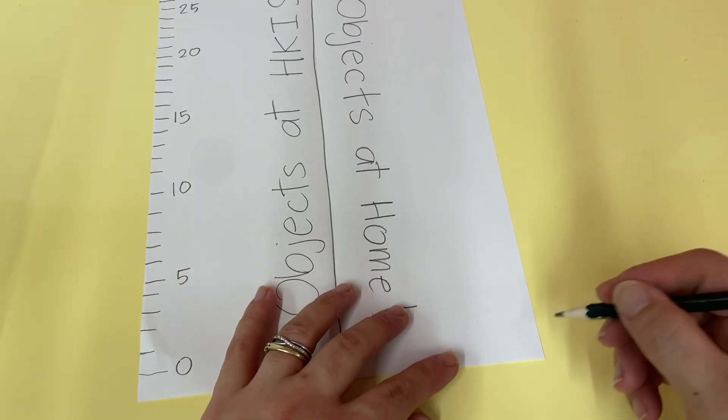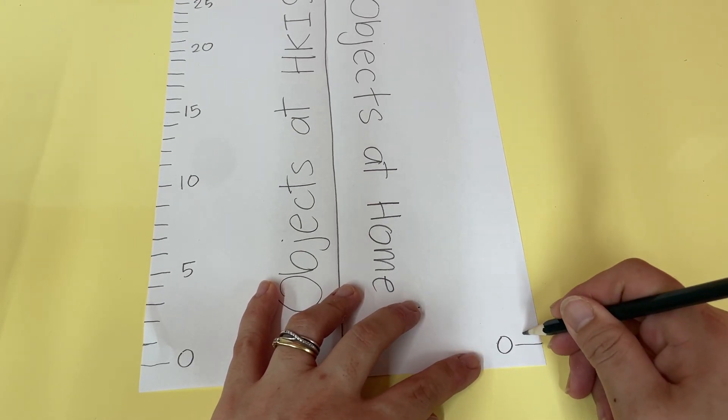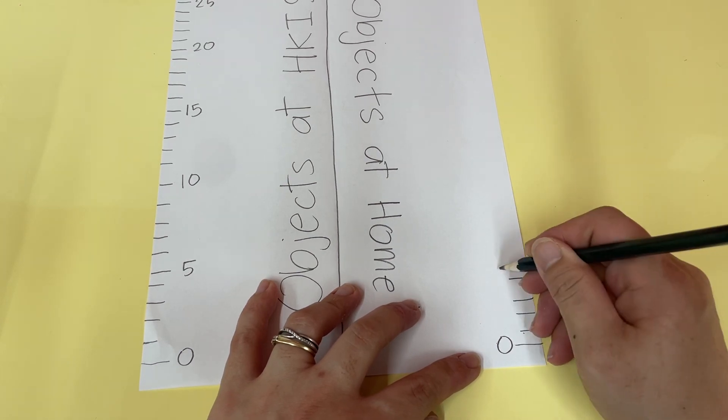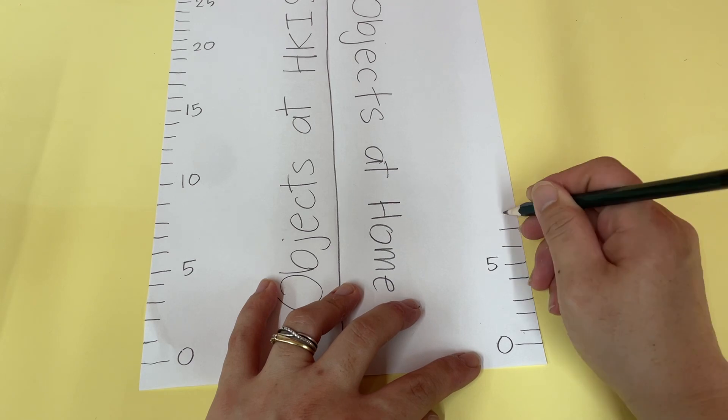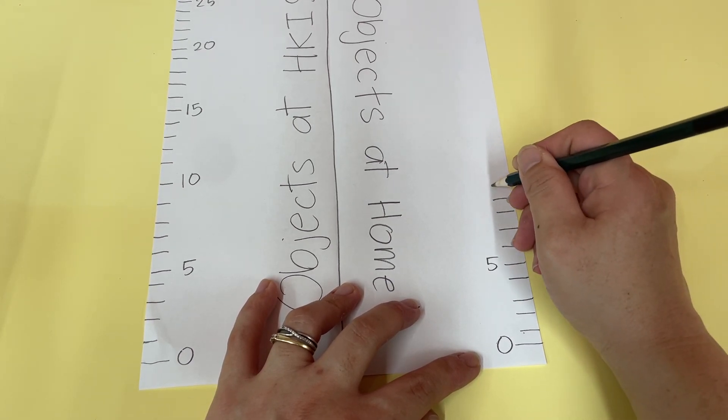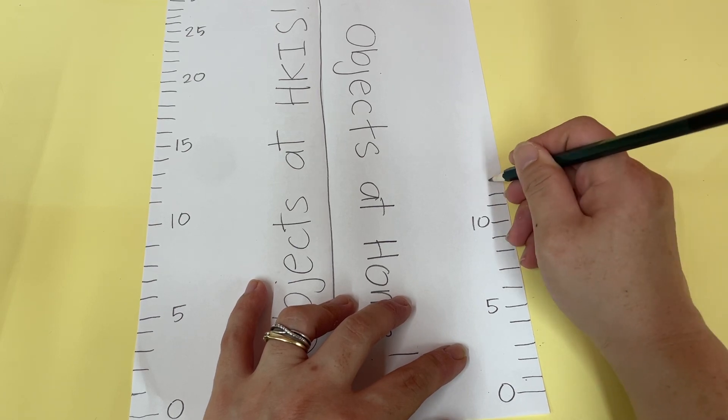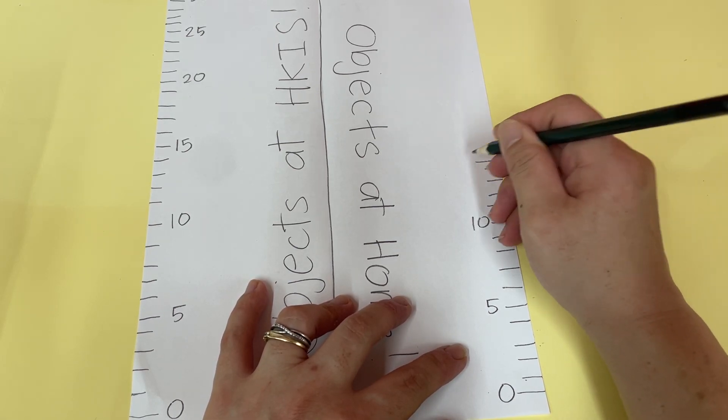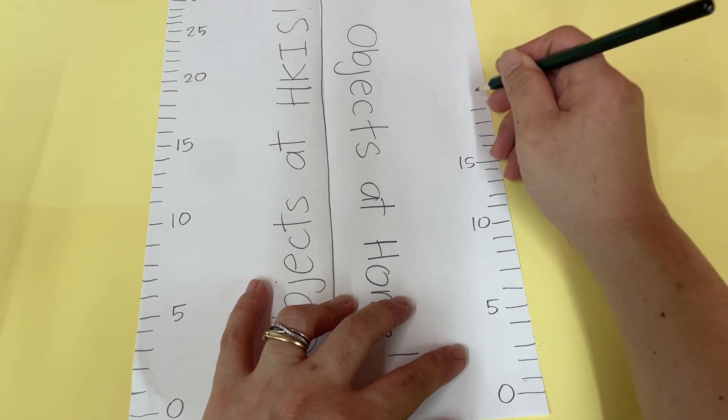And same here on the other side. Start with 0, 1, 2, 3, 4, 5, 6, 7, 8, 9, 10, 11, 12, 13, 14, 15, 16, 17, 18, 19...